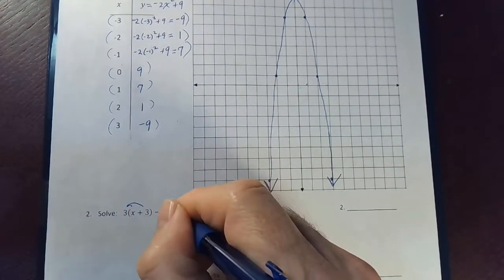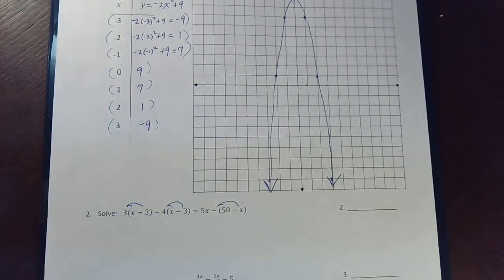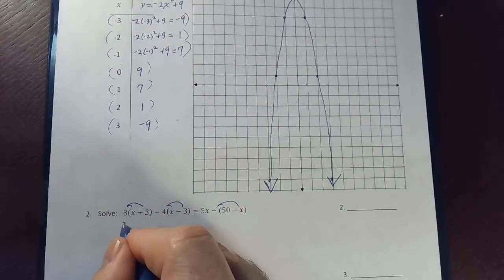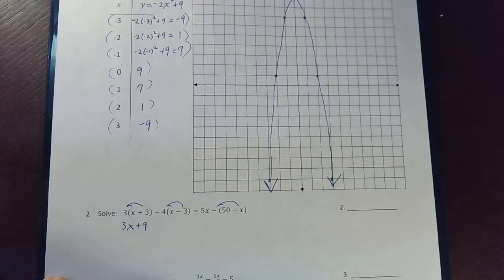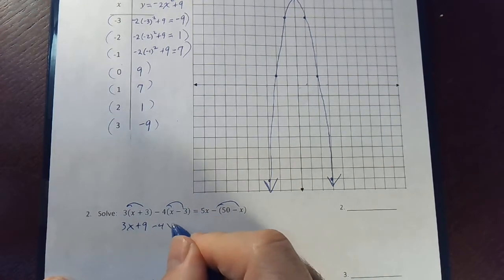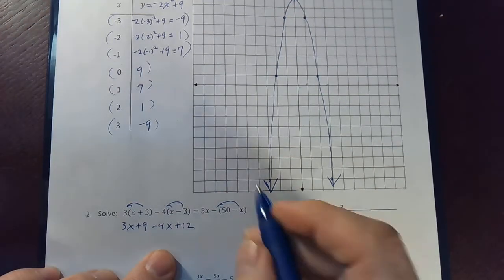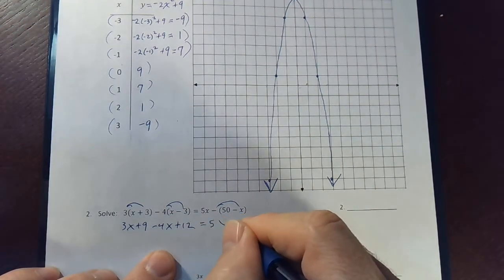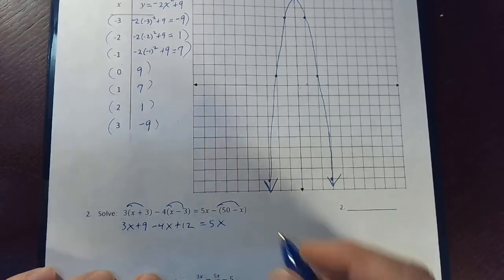So let's just use, first, step 1. Let's just do the distributive property 3 times. So, 3x plus 9 minus 4x plus 12 is equal to 5x. Now we distribute this minus. It's like having a minus 1 times everything in parentheses. Minus 50 plus x.